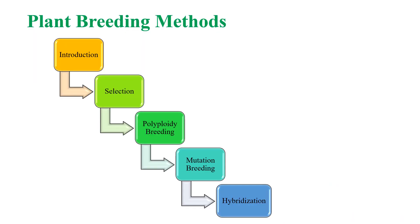Plant breeding involves various steps to develop high yielding varieties. This slide shows different plant breeding methods, which includes introduction of new varieties of plants, selection, polyploidy breeding, mutation breeding, and hybridization.